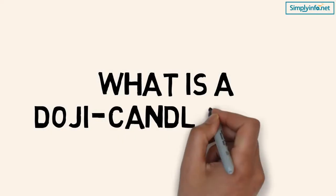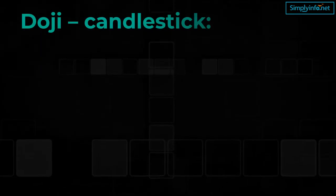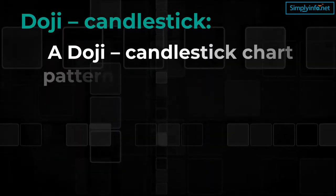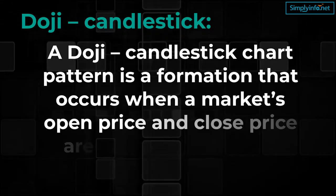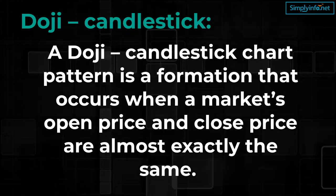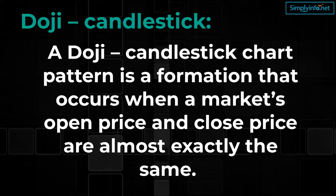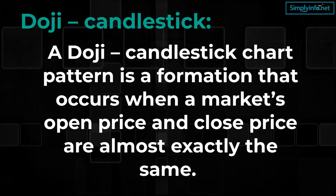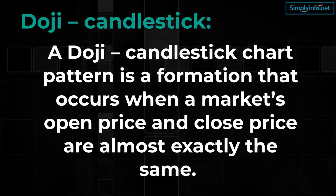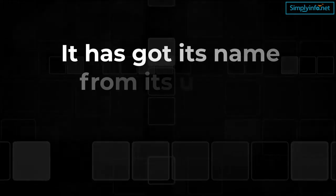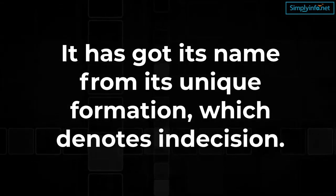What is doji candlestick? A doji candlestick chart pattern is a formation that occurs when a market's open price and close price are almost exactly the same. It looks like a cross as the opening price and closing price are equal or almost the same.